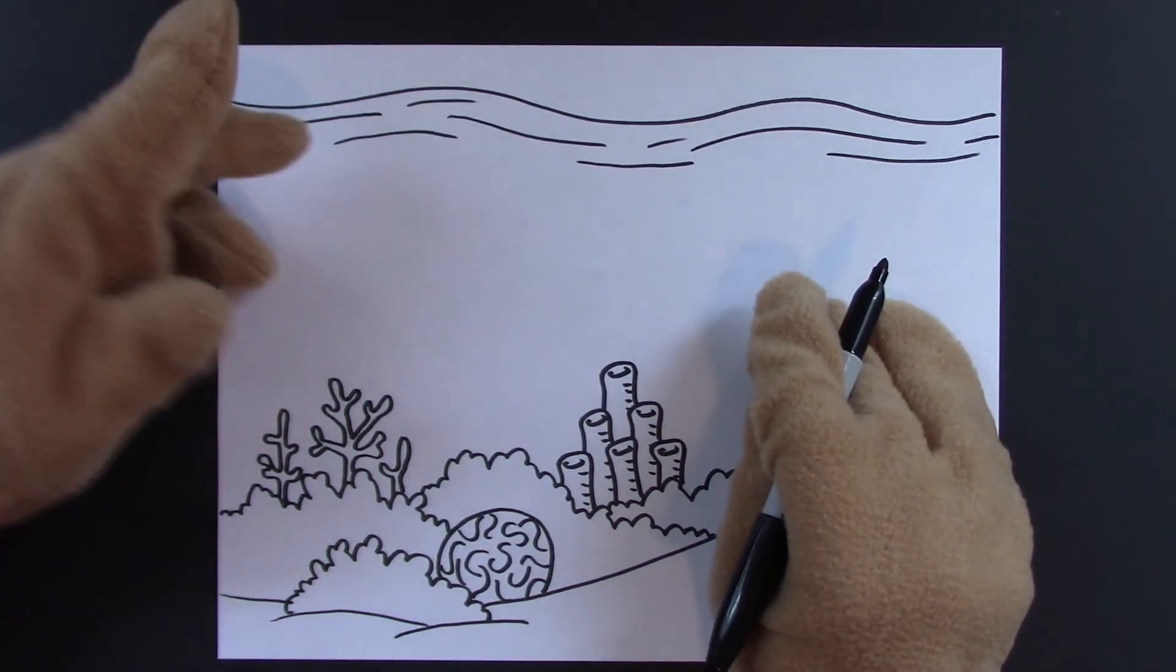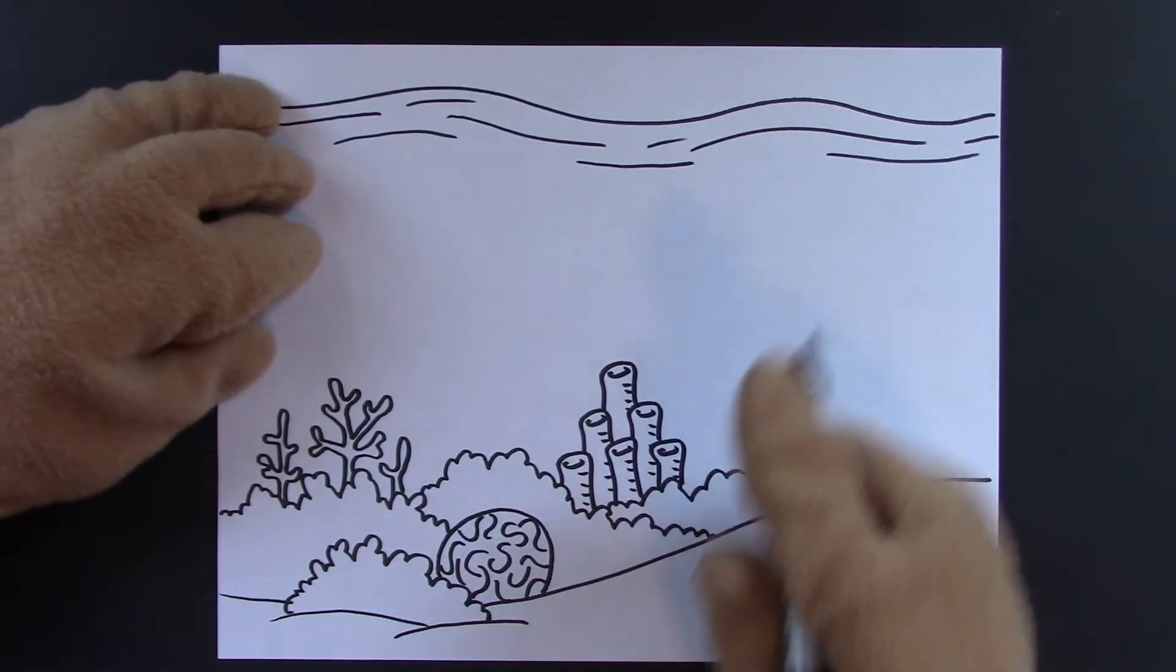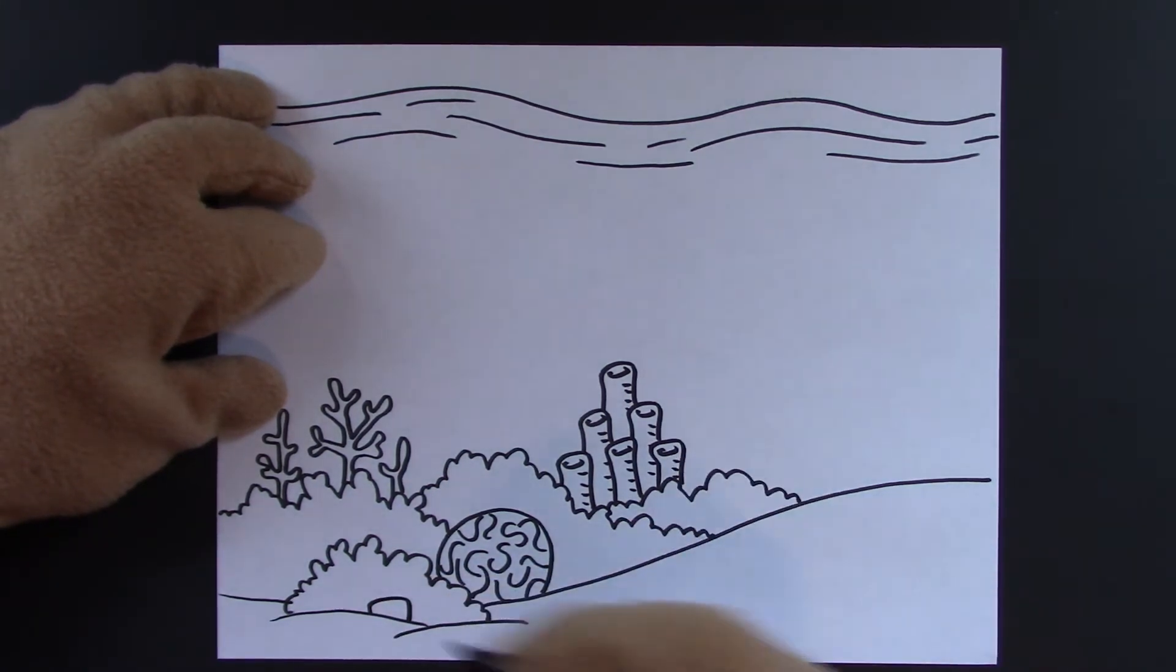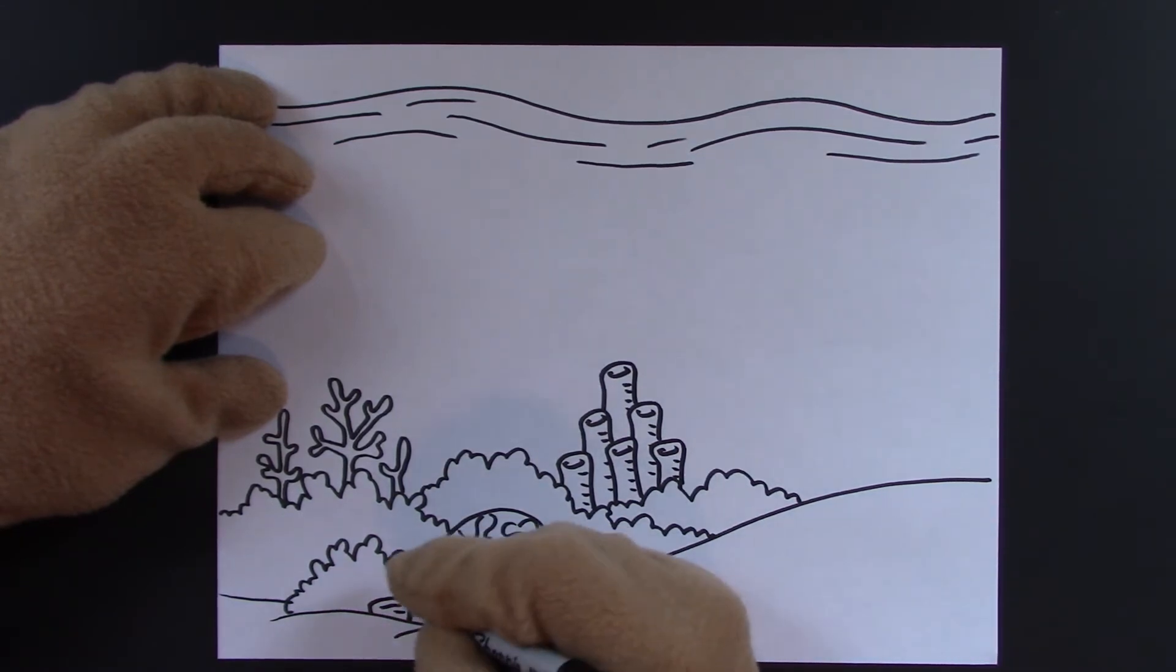Now the next thing we can draw is a sea anemone. Down here, it looks a little bit like one of our tubes. A couple lines. But now the tentacles are very squiggly little lines. Sort of chunky looking.